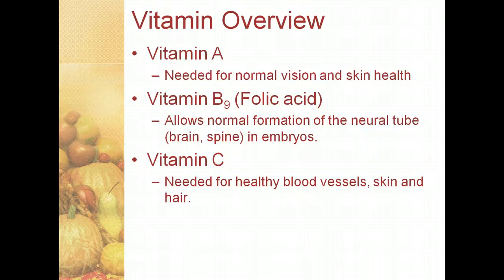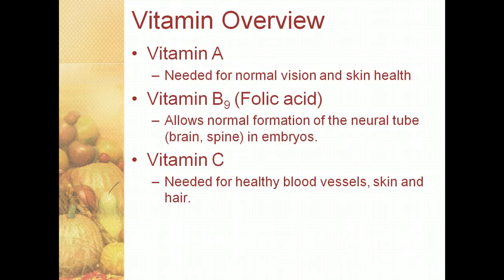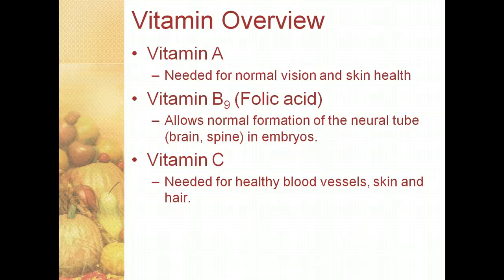If you're a woman who's thinking about getting pregnant, it's very important to make sure you're getting enough folic acid, because the neural tube develops between the fourth and sixth week of pregnancy — which is often before a woman realizes she's pregnant. Vitamin C is needed for healthy blood vessels, skin, and hair; the absence of vitamin C can cause a disorder called scurvy.